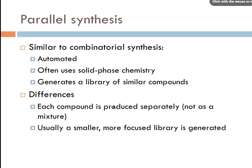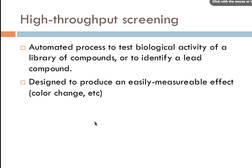Parallel synthesis is similar to combinatorial synthesis in that it is automated, often uses solid-phase chemistry, and generates a library of similar compounds. The key difference is that each compound is produced separately — no mixture is formed. It typically generates a smaller, more focused library. The two methods can be used together: combinatorial synthesis for a broad initial screening, then parallel synthesis to narrow down the library.